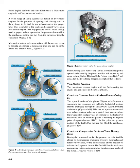One-way pressure valves, called spring, reed, or poppet valves, open when the pressure drops within the crankcase, pulling the fuel from the carburetor into the crankcase. Mechanical rotary valves are driven off the engine, rotate to provide an opening at the precise time, and can be on the intake and exhaust ports. Piston porting does not use any valves — the fuel inlet port is opened and closed by the piston position as it moves up and down in the cylinder, called a piston-ported inlet.